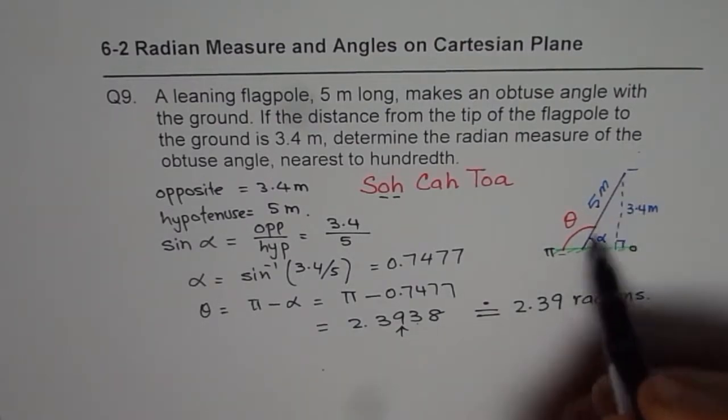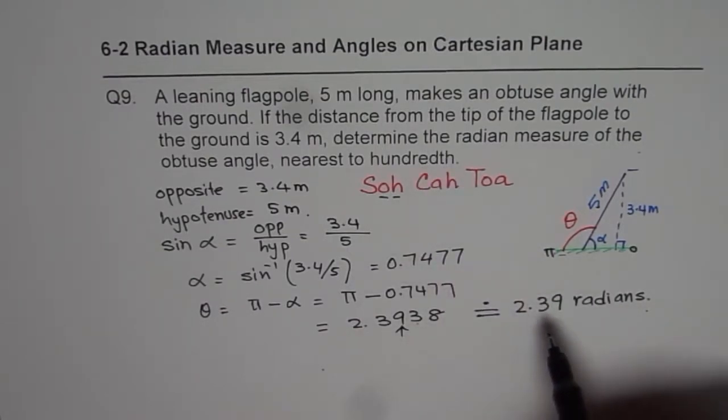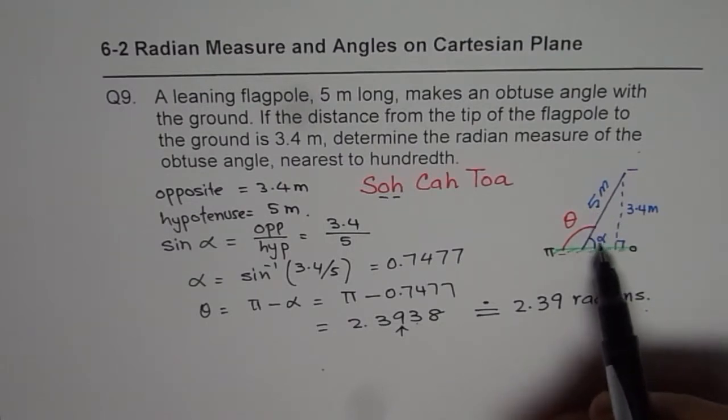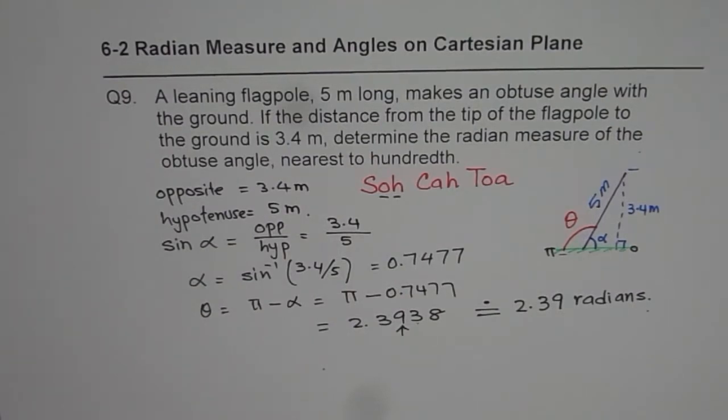I hope the steps are very clear. Make a neat sketch. Understand what the statements are. In this case we are given opposite and hypotenuse, so sine is the ratio that can be used. Find the acute angle, and then to find the obtuse angle take away the acute angle from pi to get the answer, and round your answer to the nearest hundredth. I hope that helps.